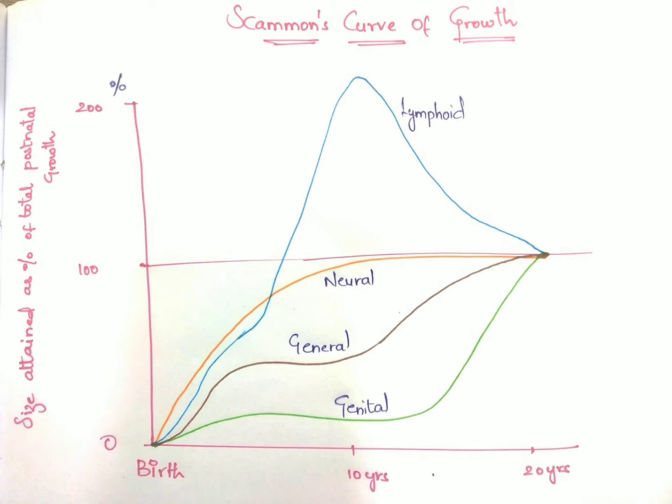Afterwards, by about 18 years of age, lymphoid tissues undergo involution to reach the adult size of 100 percent. As you can see here, the lymphoid tissue is going down and will attain 100 percent of its growth at the age of 18 to 20 years. You can clearly appreciate the blue curve which goes up and then slowly comes down, reaching 100 percent at the age of 20 years.